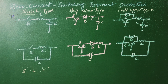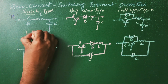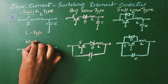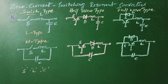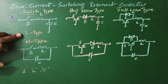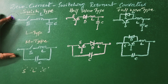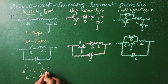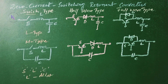ZCS resonant converters are classified into two types: L type and M type. Both circuits are shown here. In both types, the inductor L limits dI/dt of the switch current, and L and C constitute a series resonant circuit.